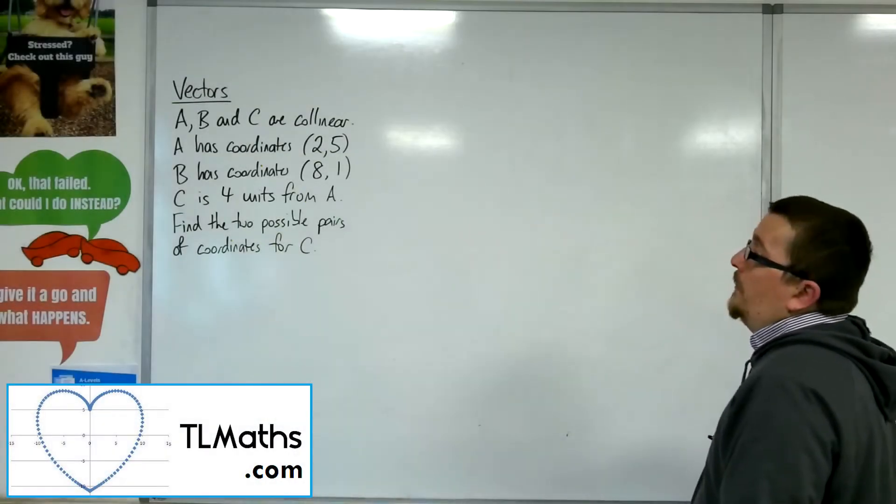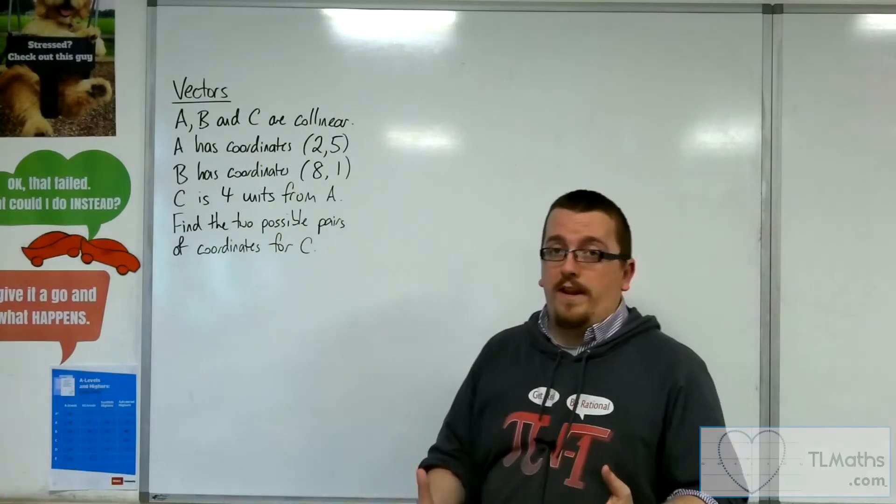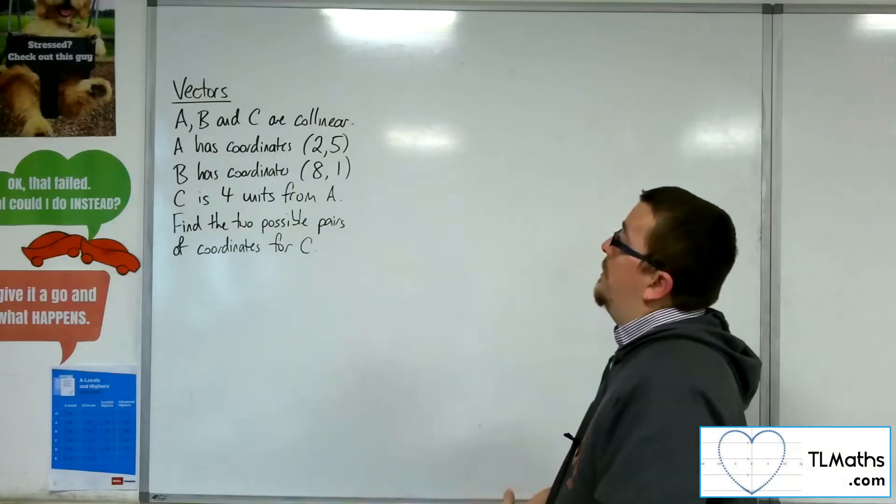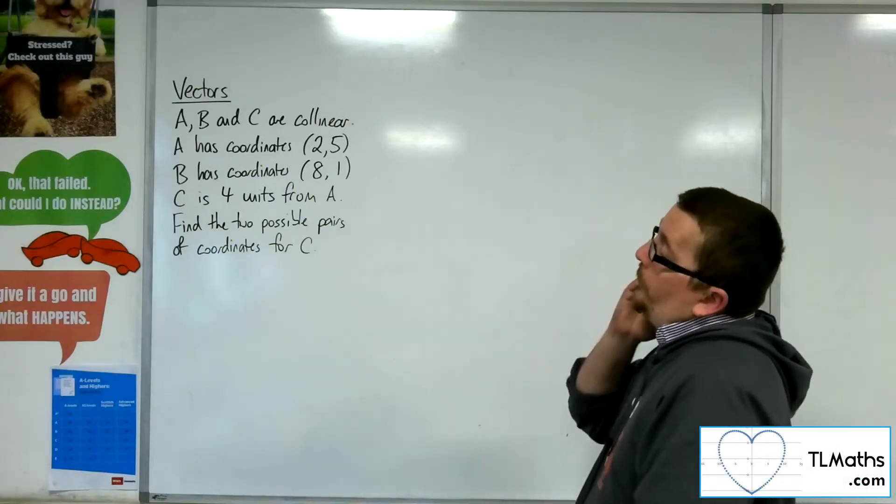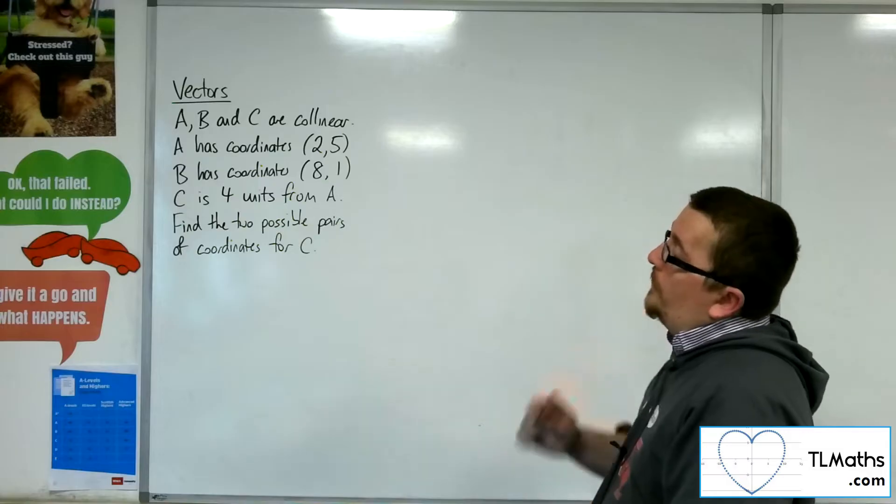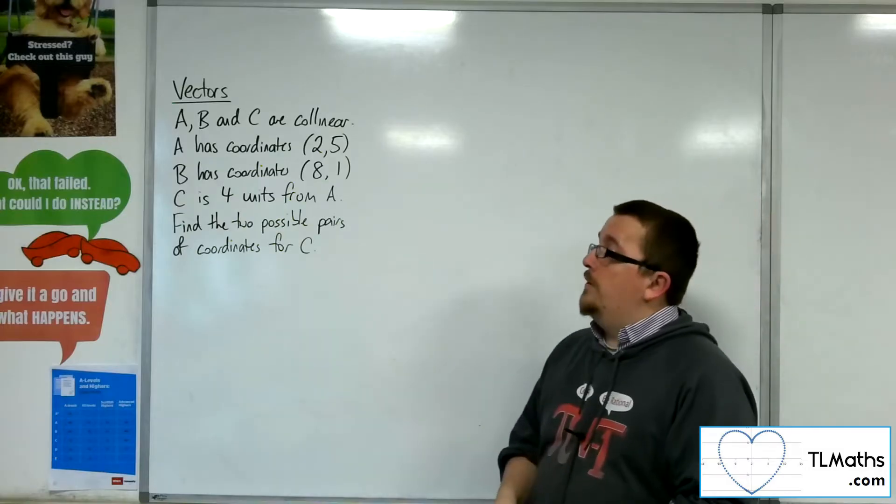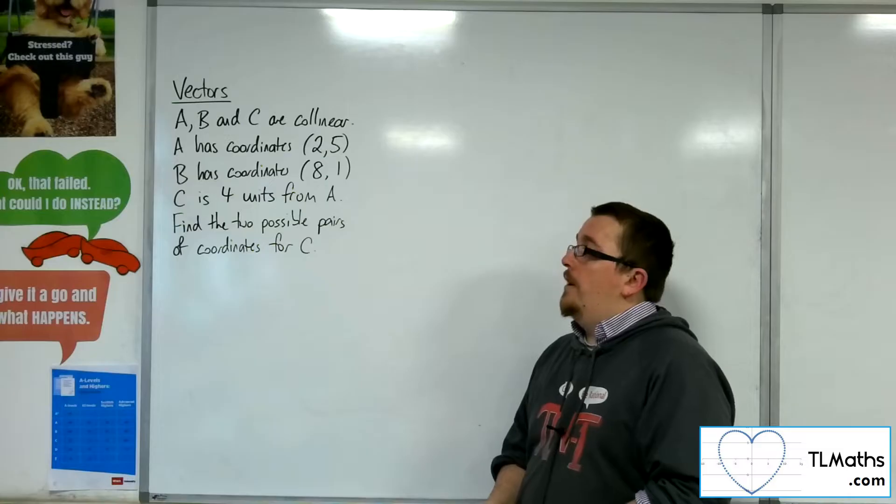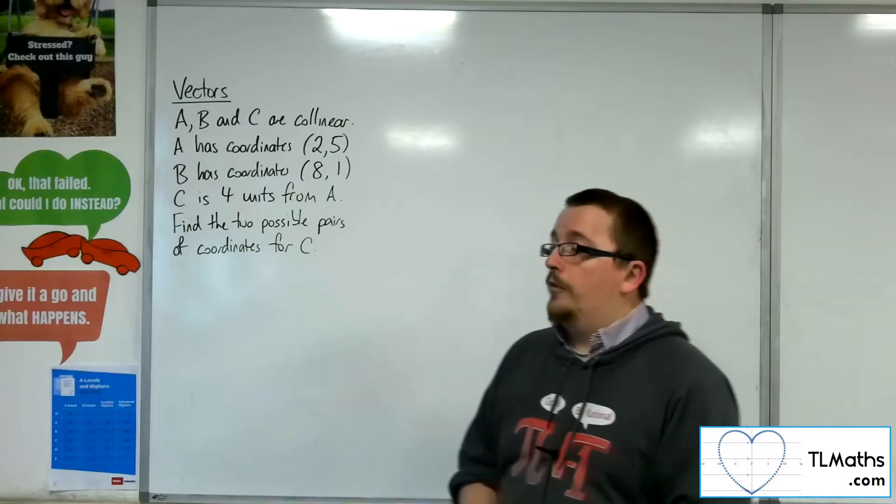Let's say I know that A, B and C are three points and they are collinear, so they all lie on the same line. A has coordinates 2, 5, B has coordinates 8, 1. C is four units from A. Find the two possible pairs of coordinates for C.